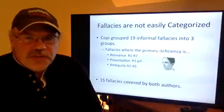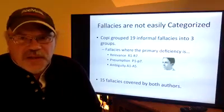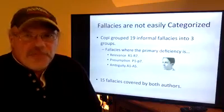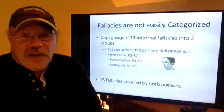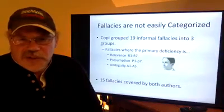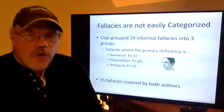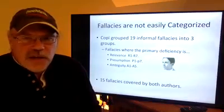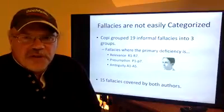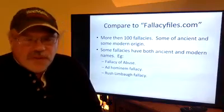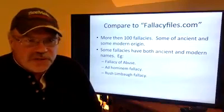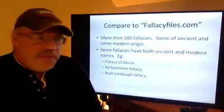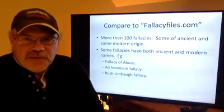The most standard logic textbook is that of Copi — one I recommended as an alternative textbook. He grouped them by relevance, presumption (which is similar to questionable assumption), and ambiguity, which has interesting differences from sleight of mind — Copi very much focuses on meaning rather than mind. When you look at the overlap, there are about 15 fallacies that both authors cover. If you compare that to something like a website like Fallacy Files or a textbook that focuses exclusively on informal fallacies, sometimes there are more than a hundred of them. Some are ancient, some have modern origins, and some have both ancient Greek or Latin names as well as modern names.